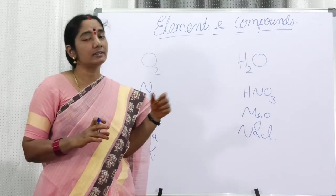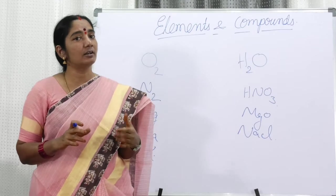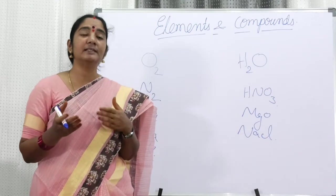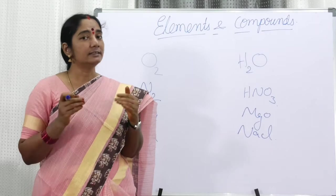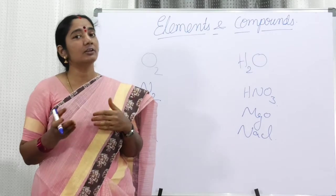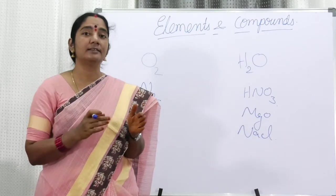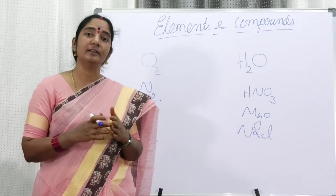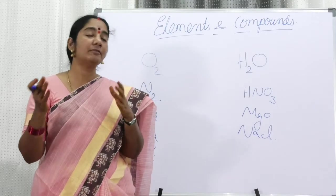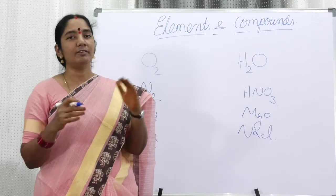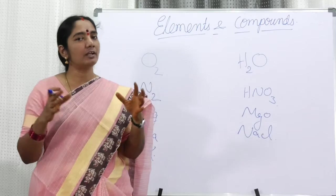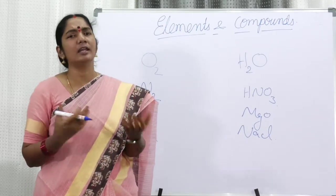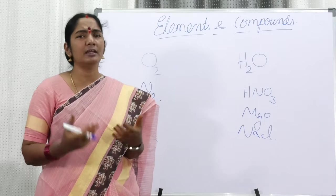We must know that some symbols are based on the element's name, some are based on Latin names, some are based on the names of scientists, some are based on the name of a country, and some are based on the name of planets. So different parameters are used while naming and giving a symbol to an element.